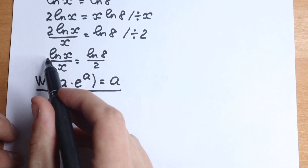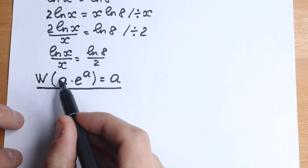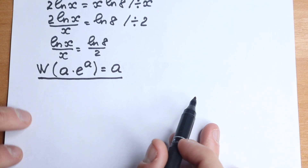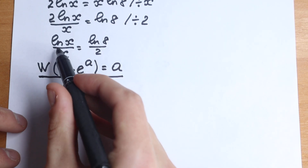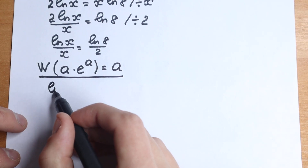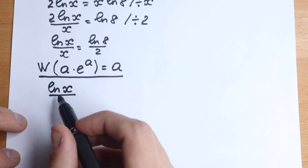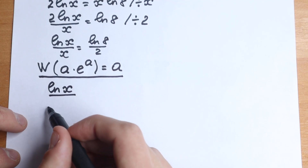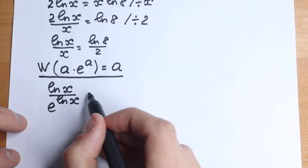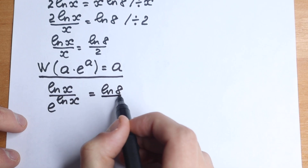Let's look at our expression and try to create this form — we need an e, and the same expression appearing twice. Let's rewrite natural log x as is, and rewrite x in the denominator as e to the power natural log x, giving us: natural log x over e to the power natural log x, equal to natural log 8 over 2.